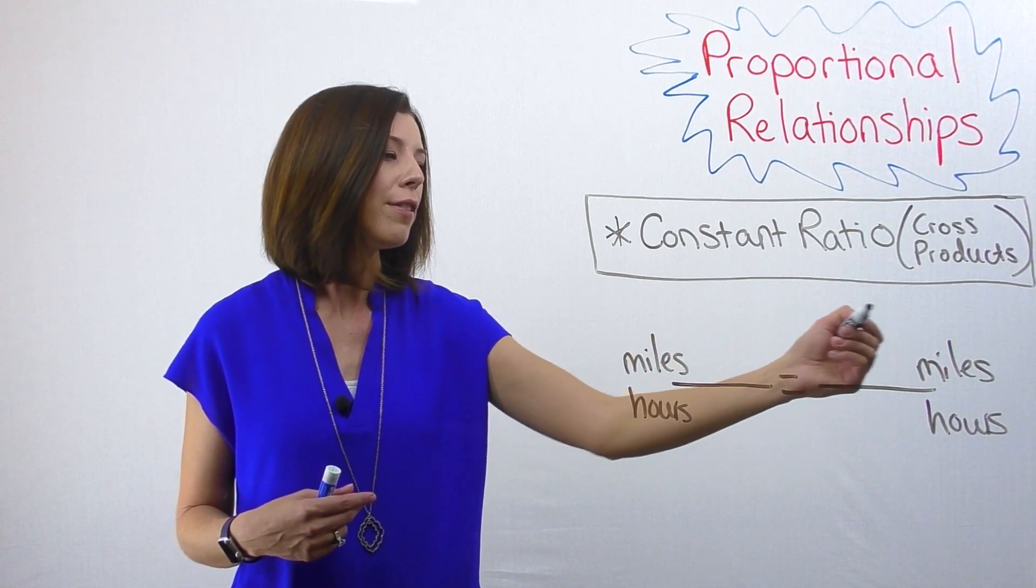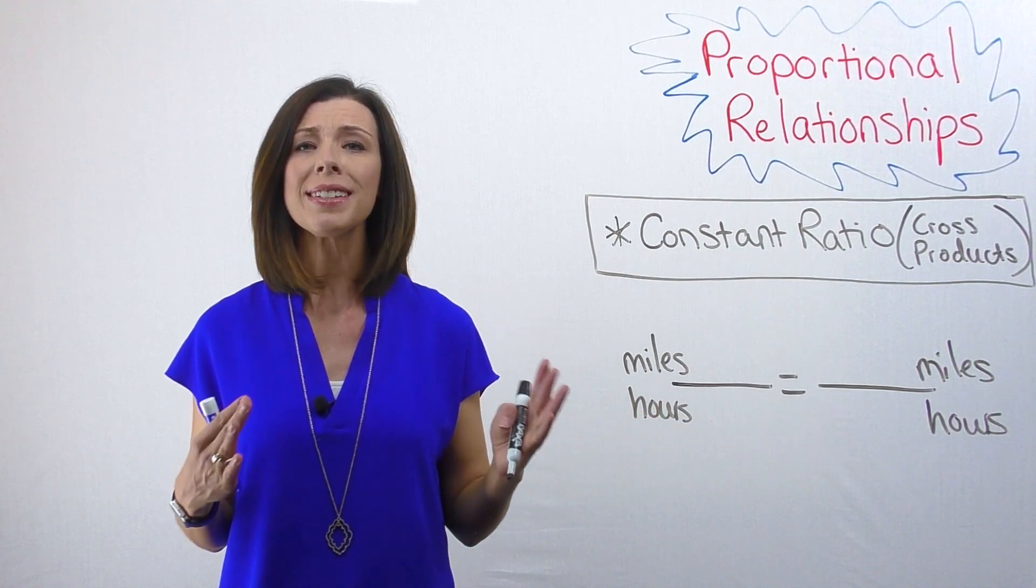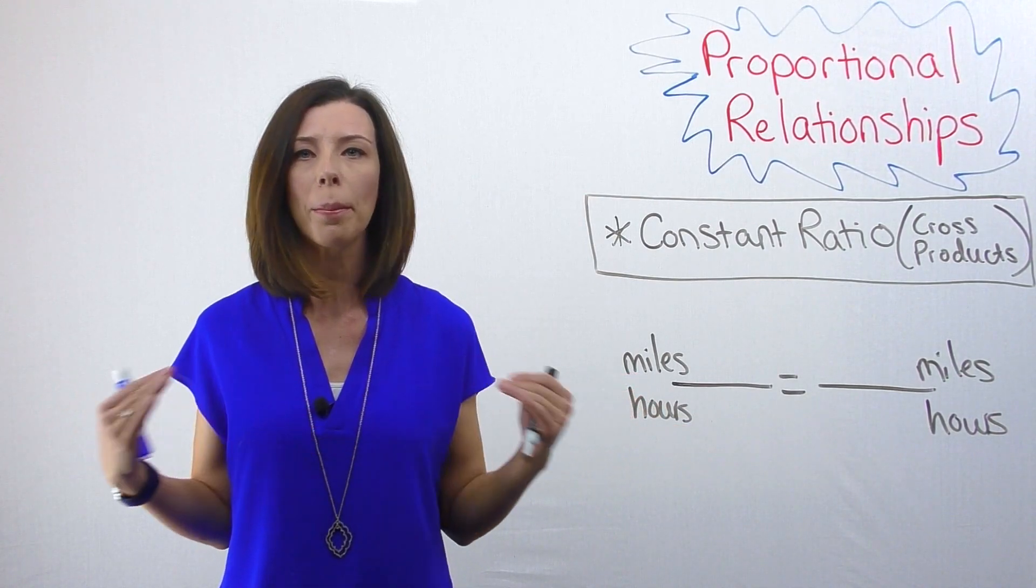That means that if I multiply these two numbers, it has to equal these two numbers. If that's not the case, it's not proportional, period, end of story.